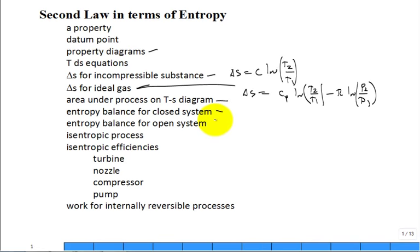It's the statement of the second law in terms of entropy for a closed system. Next time we'll move into open systems, but for today it's all closed system.